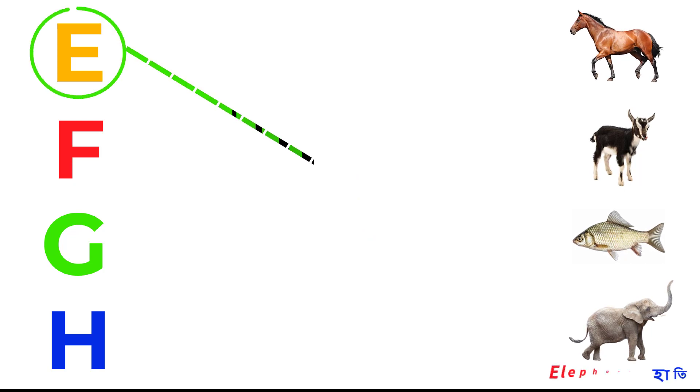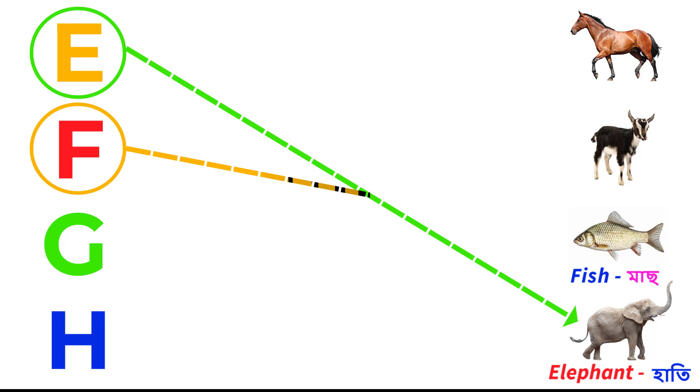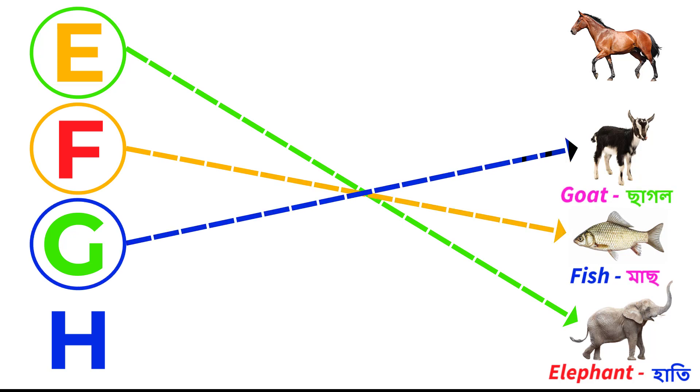E for elephant, F for fish, G for goat, H for horse.